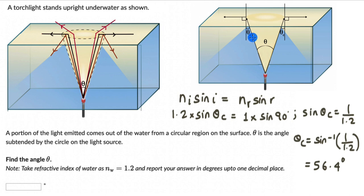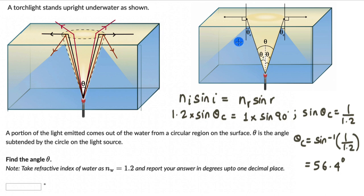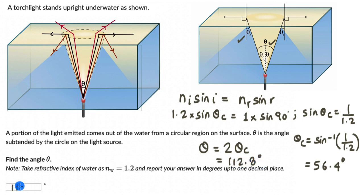Now we know the critical angle, but we need to figure out theta. If we draw a normal that goes right through the torchlight source, this normal and the normal at the surface are parallel to each other. The half angle at the source equals the critical angle because they are alternate angles. Therefore theta equals 2 × θc, which is 2 × 56.4 = 112.8 degrees.